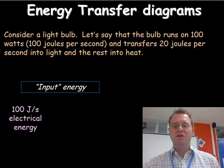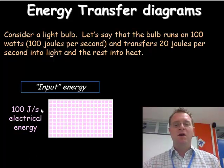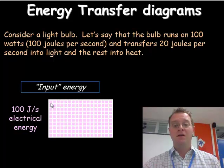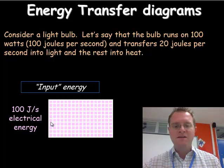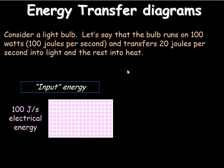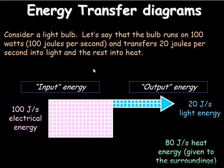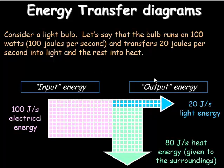How could I show this diagrammatically? First of all, I think about the input energy, 100 joules per second. Now the important bit of this diagram is my 100 joules per second is related to the width of my diagram. Here I've shown it as 10 squares across, so that means each square is equivalent to 10 joules per second of input energy. Then I'm going to show some output energy.